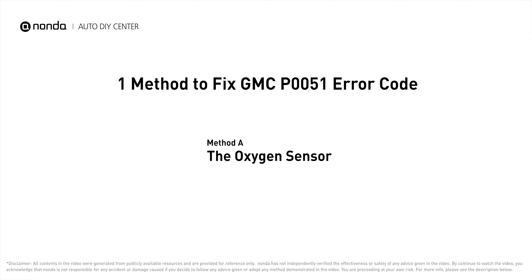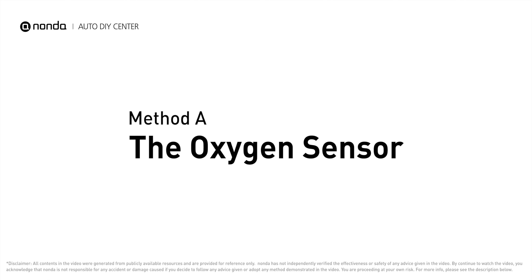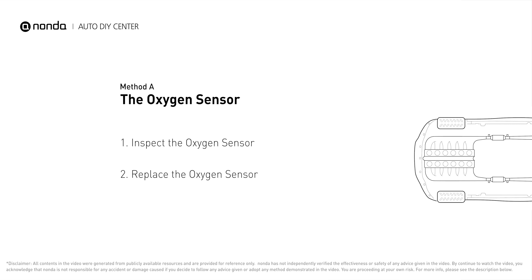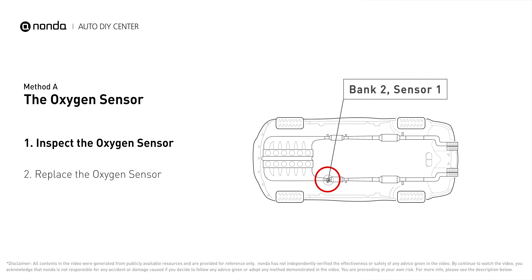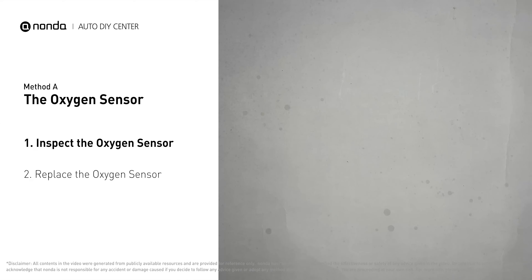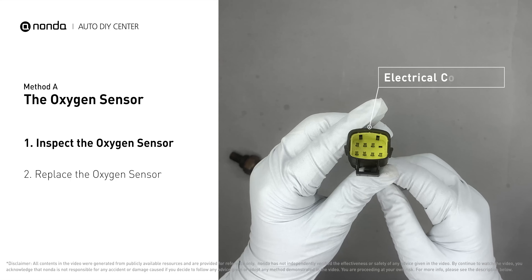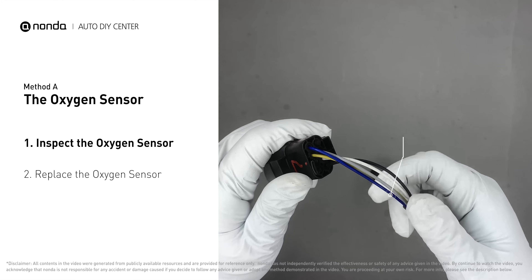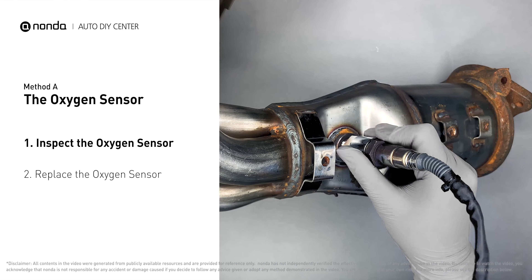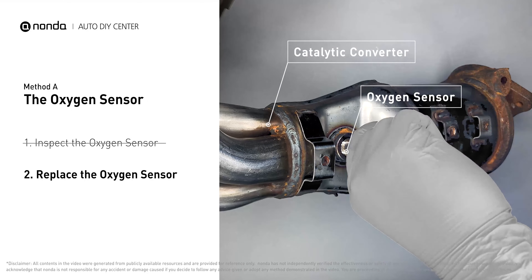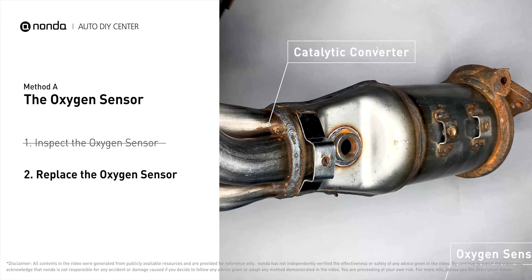Here is one of the most practical solutions to fix GMC's P0051 error code — Method A: the oxygen sensor. This oxygen sensor is located right before the catalytic converter. Bank 2 is on the side with cylinder number 2; sensor number 1 is usually the one in the exhaust manifold. Visually check the oxygen sensor's electrical connections, wire harness, and metal tabs for any damage. If damage is found, replace the oxygen sensor.